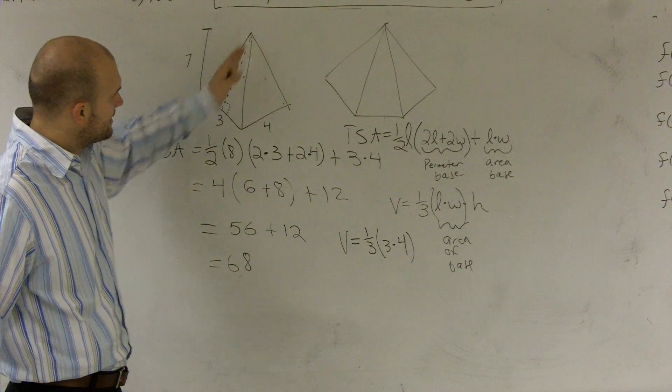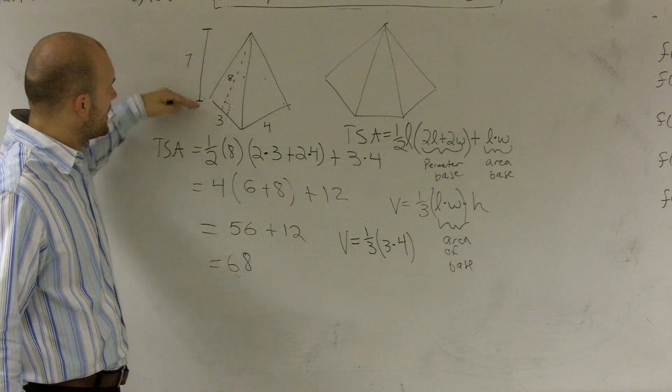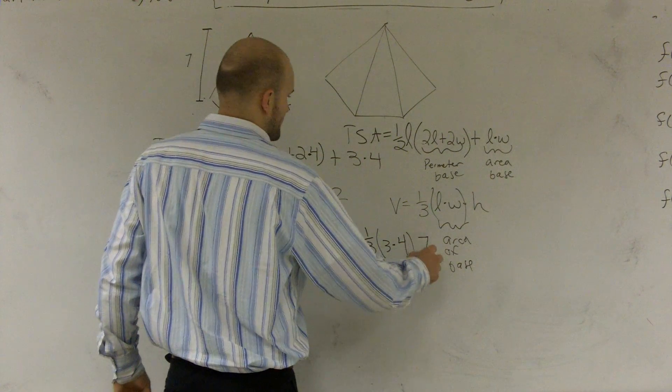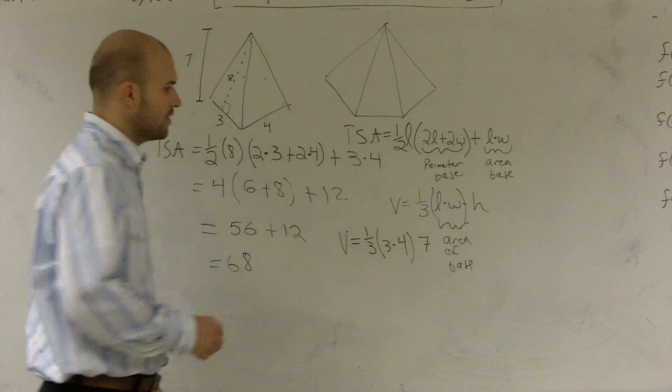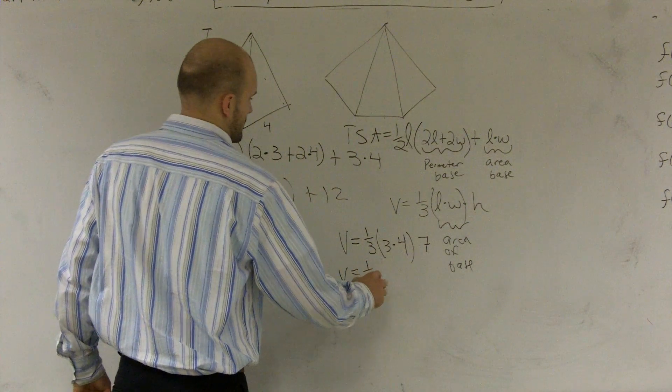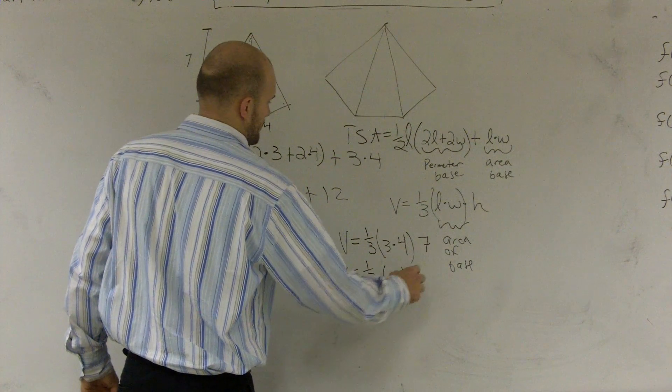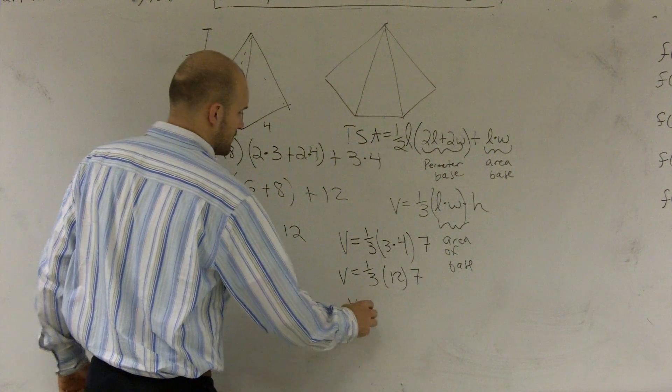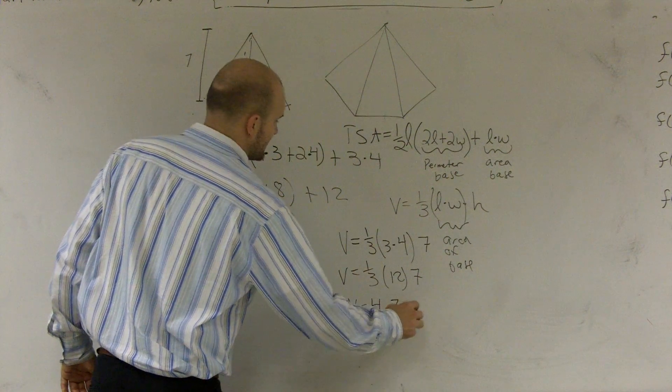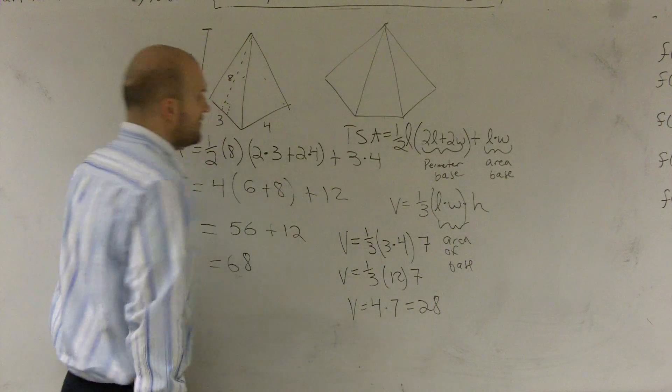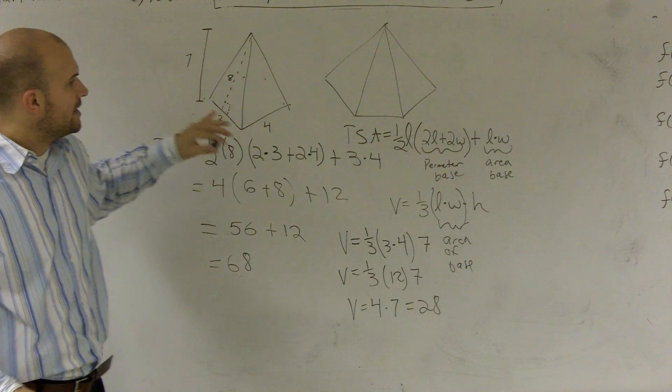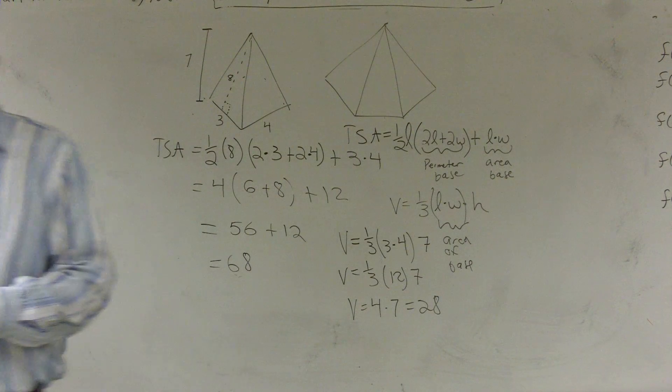Now, remember, 8 was my length of my side. So my height is going to be how tall is my figure, which in this case is 7. So 3 times 4 is 12. 1 third times 12 is 4. 4 times 7 equals 28. And that's how you find the total surface area and the volume of a pyramid with a rectangular base.